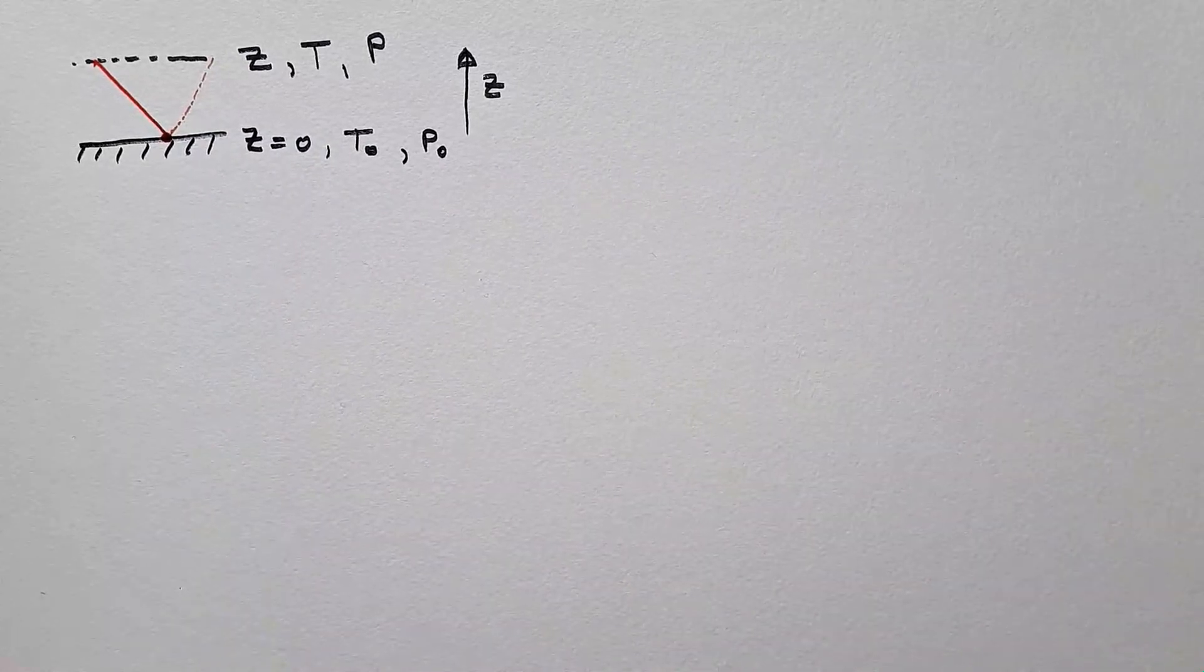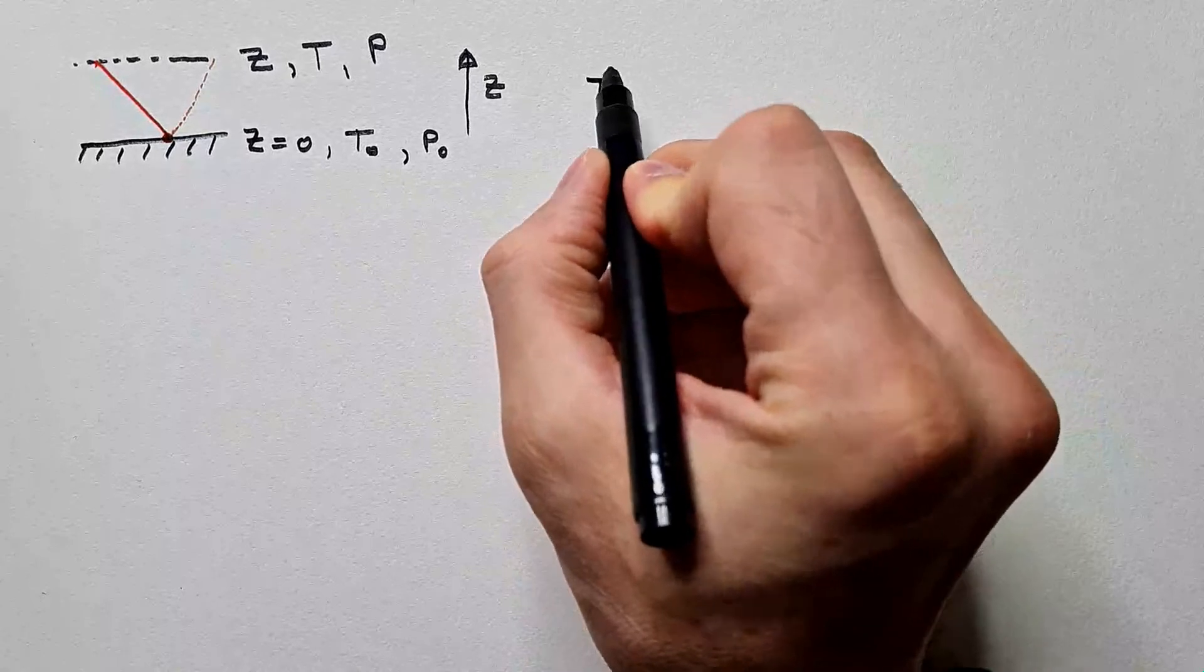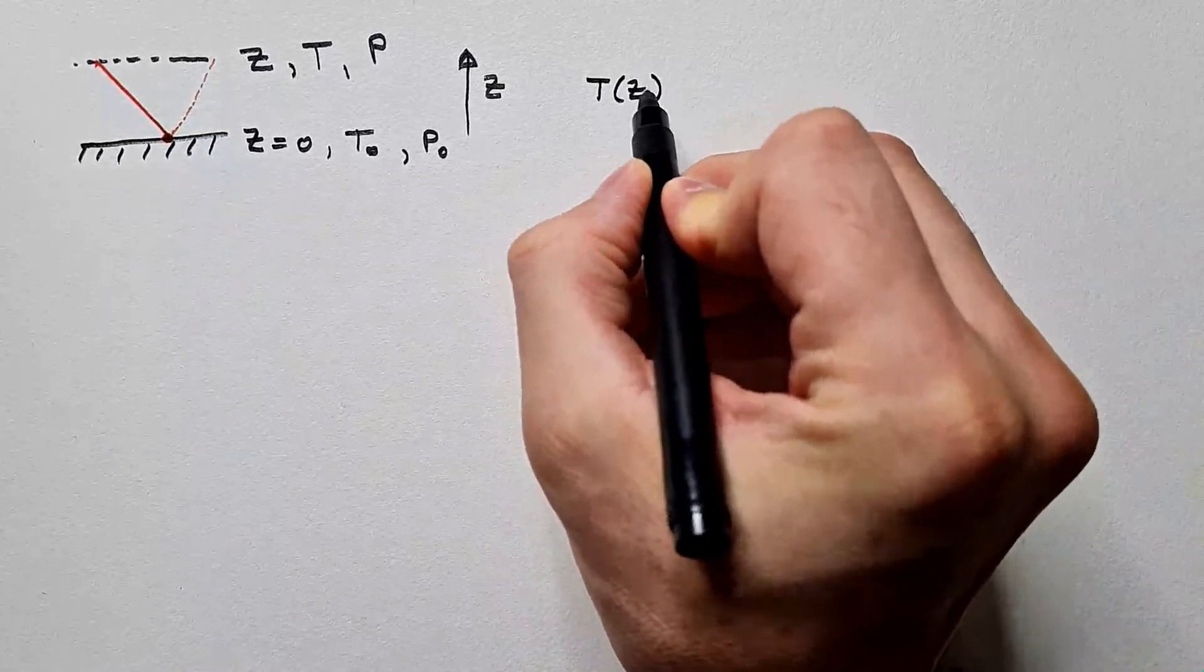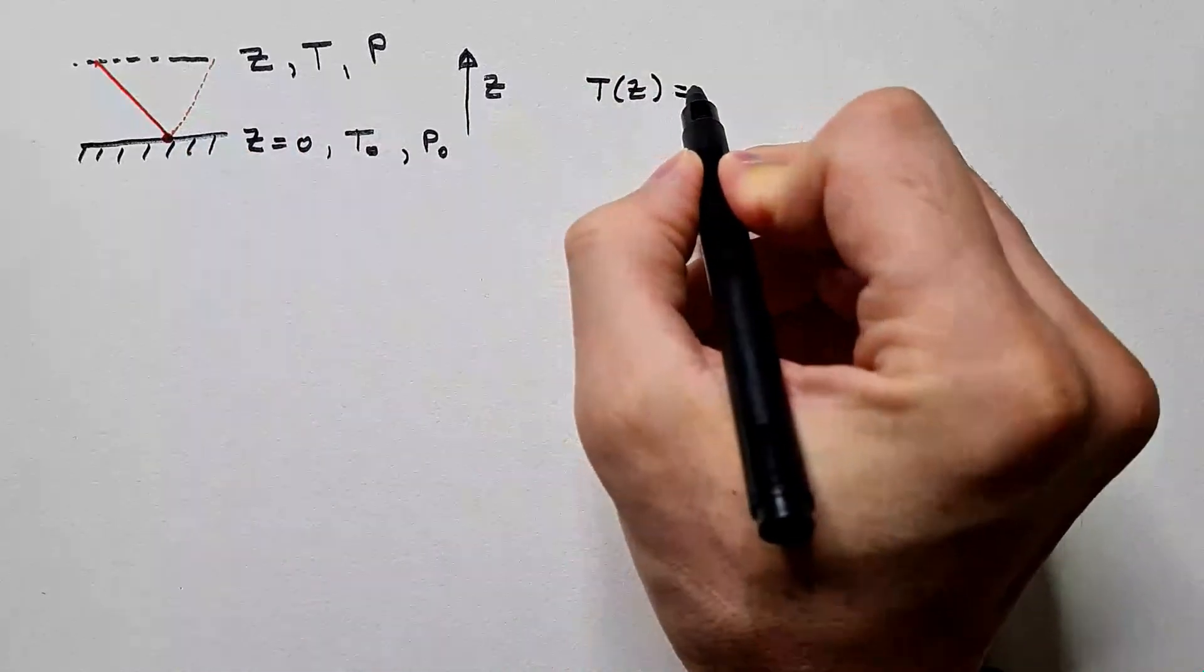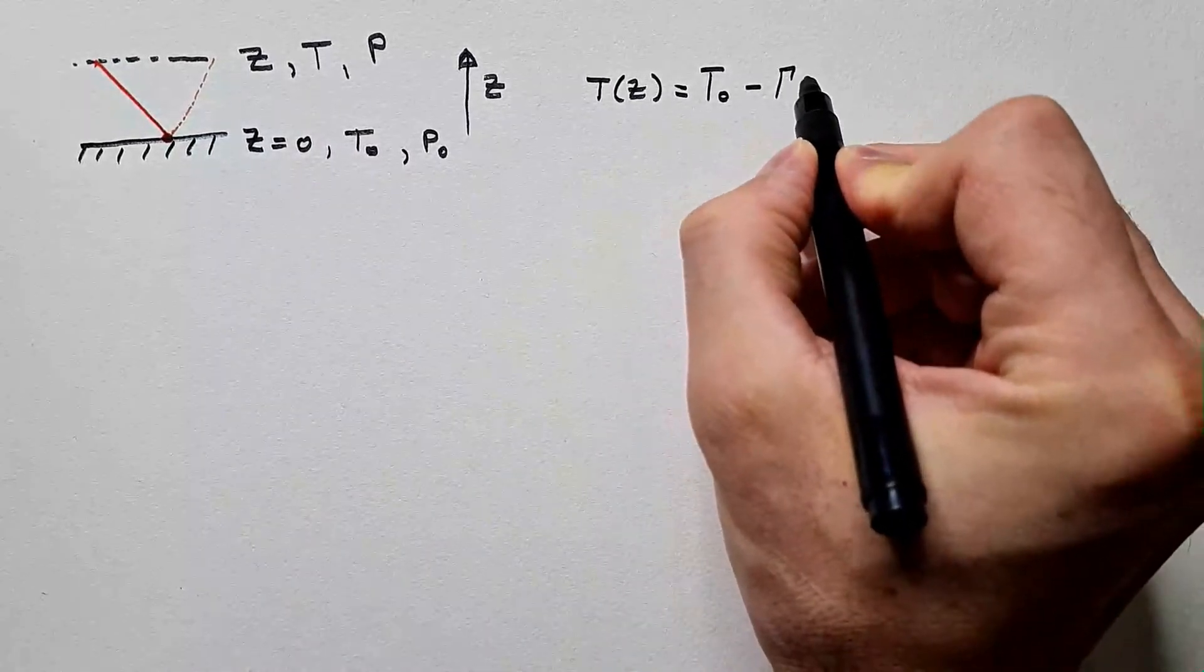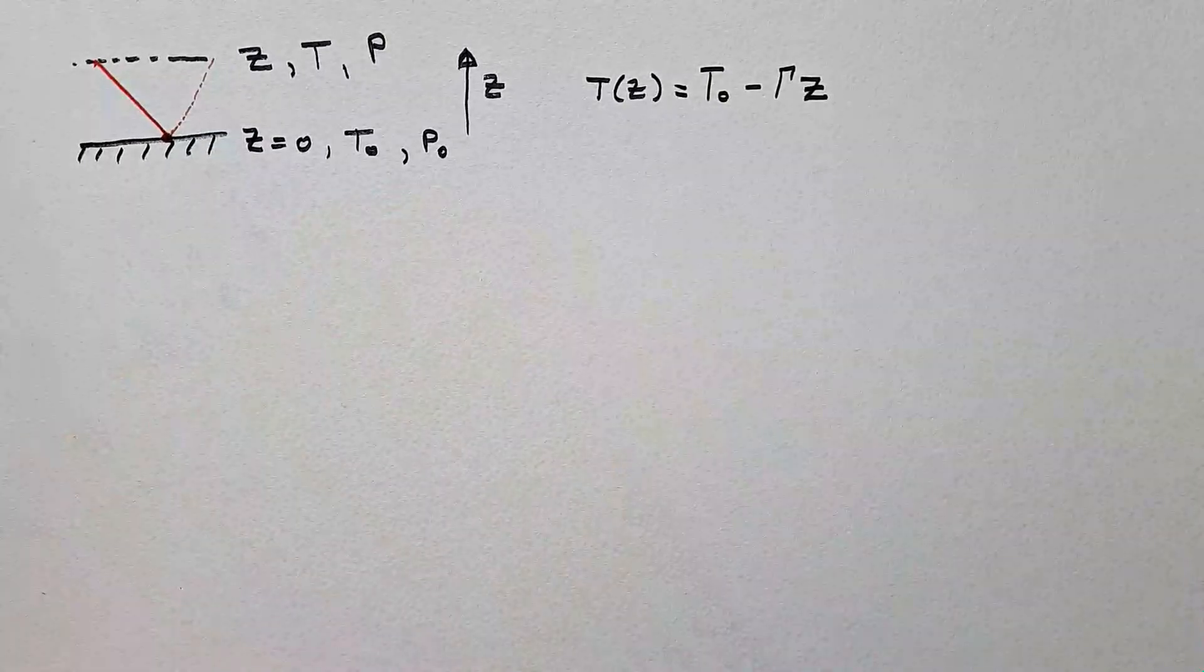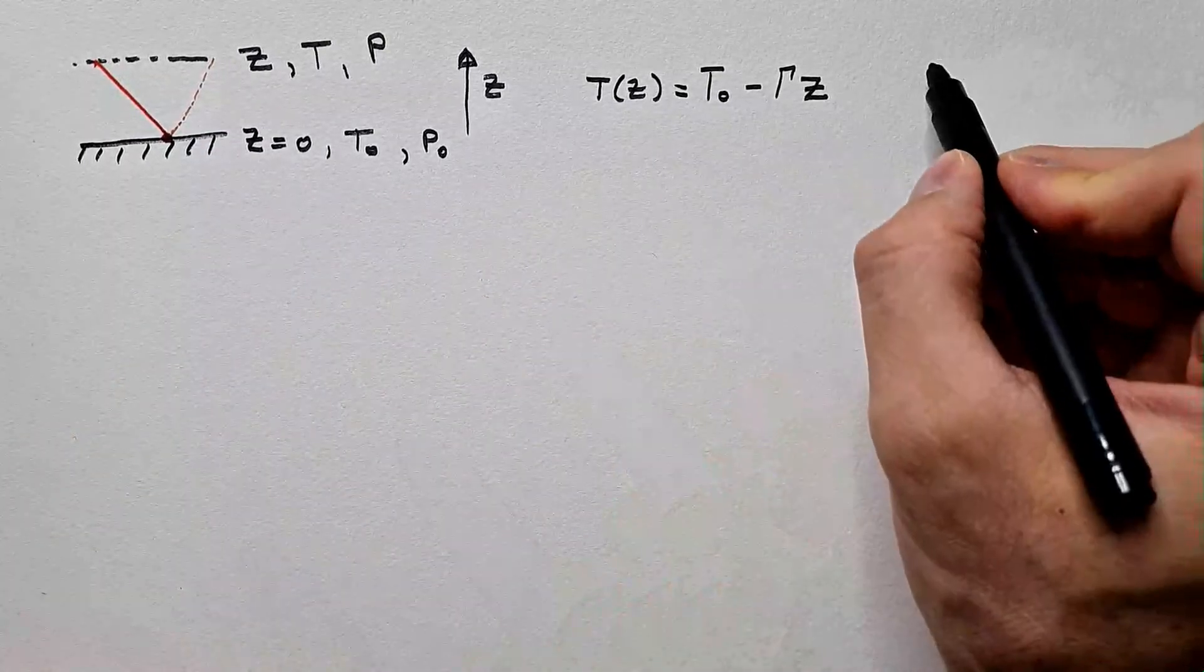in other words, straight line. Under this assumption, we can say that temperature at this height z is T₀ minus γz, where γ is the slope of this line, and it is called temperature lapse rate.